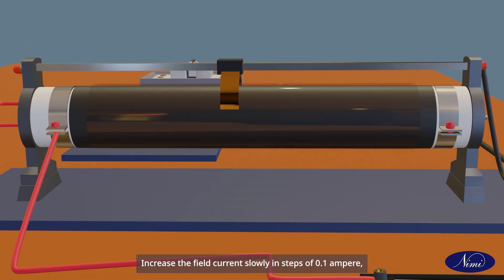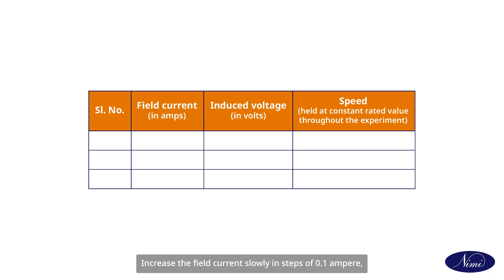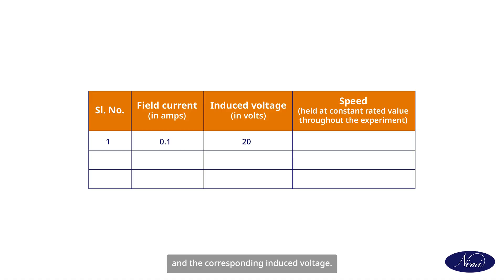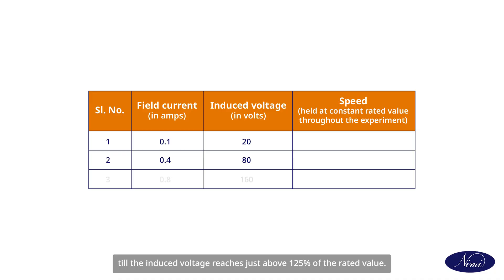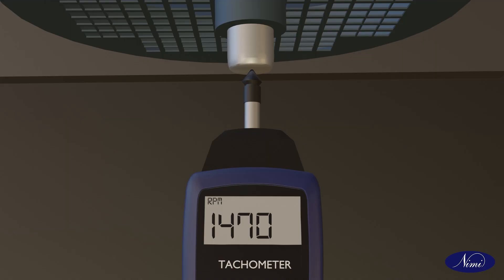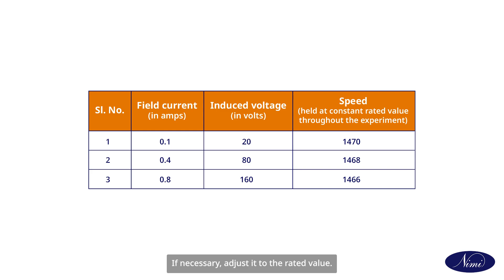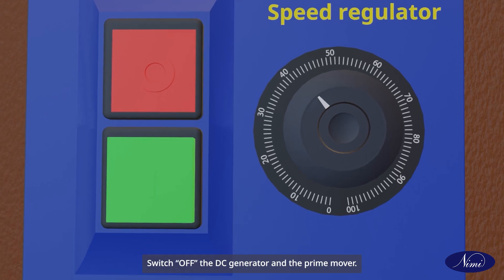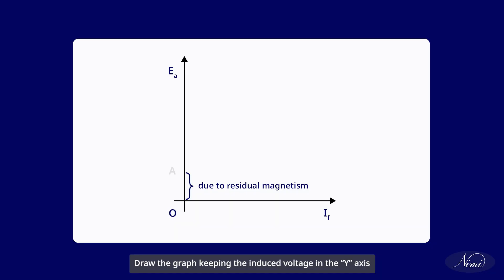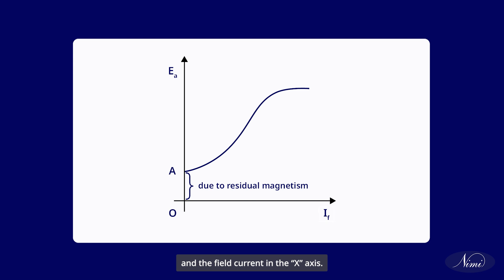Increase the field current slowly in steps of 0.1 ampere, and for each step note down the field current and the corresponding induced voltage. Increase the field current only till the induced voltage reaches just above 125 percent of the rated value. Check the speed of the generator at intervals and, if necessary, adjust it to the rated value. Switch off the DC generator and the prime mover. Draw the graph keeping the induced voltage on the Y-axis and the field current on the X-axis.